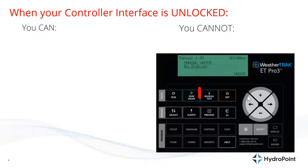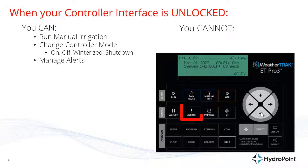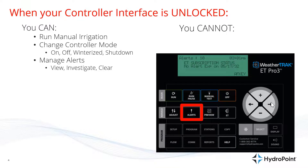We're focused on the maintenance features, so it's important that you can run manual irrigation, test your system, and run wet checks in the field. You can also change your controller mode — turn your controller on, off, to winterized, or shut down. When a controller is unlocked, you can also manage alerts, meaning you can view any alerts you have, investigate which stations or what details the controller knows about your alerts, and clear those alerts.